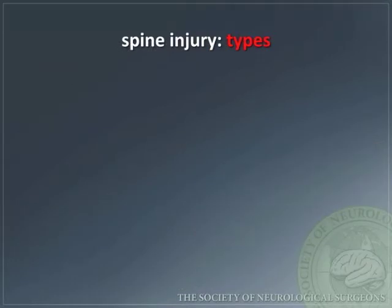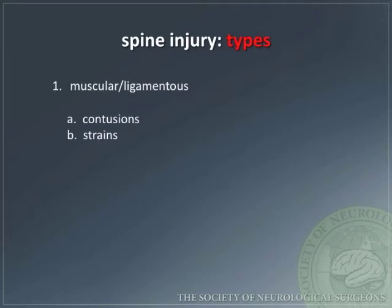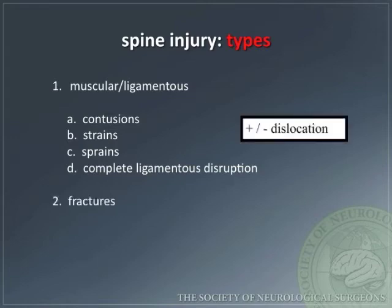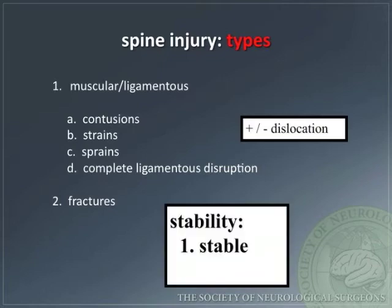Spine injuries may be either muscular ligamentous — including contusions, strains, sprains, and complete ligamentous disruption plus or minus dislocation — or fractures, which may be stable or unstable.